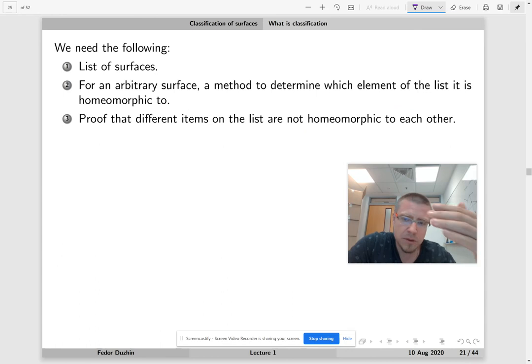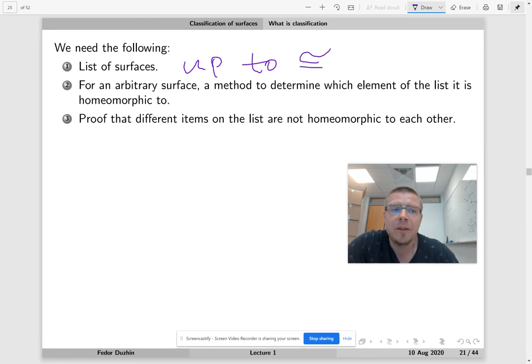Now, so an analogy for surfaces would be something like this. So first, list of surfaces, up to homeomorphism, right? So notice that this notation in linear algebra means isomorphism, in topology means homeomorphism. So list of surfaces.